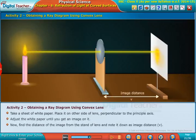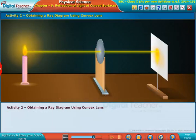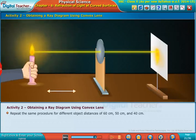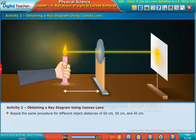Note it down as image distance v. Similarly, find the distance between the candle and stand of the lens and note it down as object distance u. Repeat the same procedure for different object distances of 60 centimeters, 50 centimeters, and 40 centimeters.